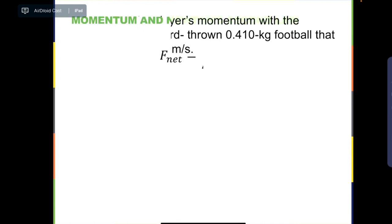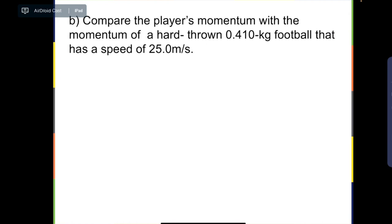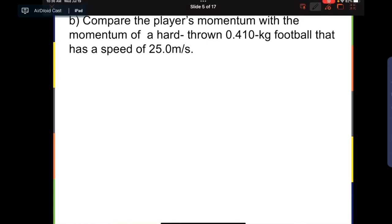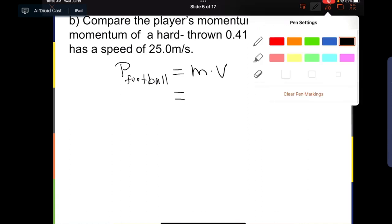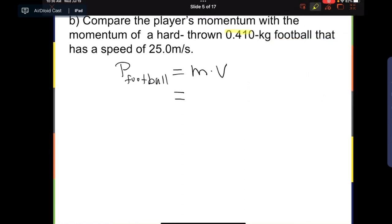So it's very similar. We are going to set up by setting momentum of the football equal to mv. And we know that mass of the football is 0.410 kg. Speed is given as well, 25.0 meters per second. Therefore, we can plug in these two numbers: 0.410 times 25.0.